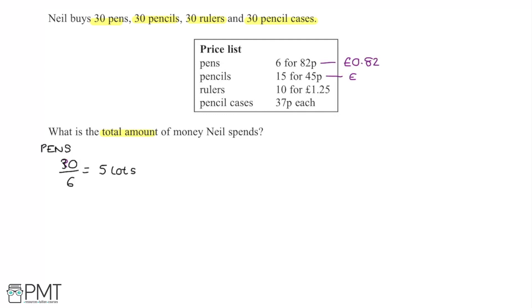I'll just do the rest while I'm here, so 45 pence. Rulers are already in pounds and then pencil cases. They can be converted as well. So if we're buying 5 lots of pens, I can take the 5 and multiply it by the cost of 1 lot of pens which is 82 pence, and that gives me an answer here of £4.10 for 30 pens.